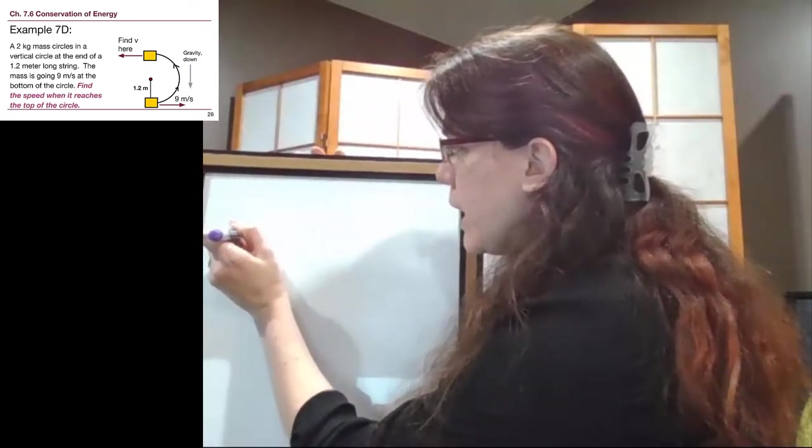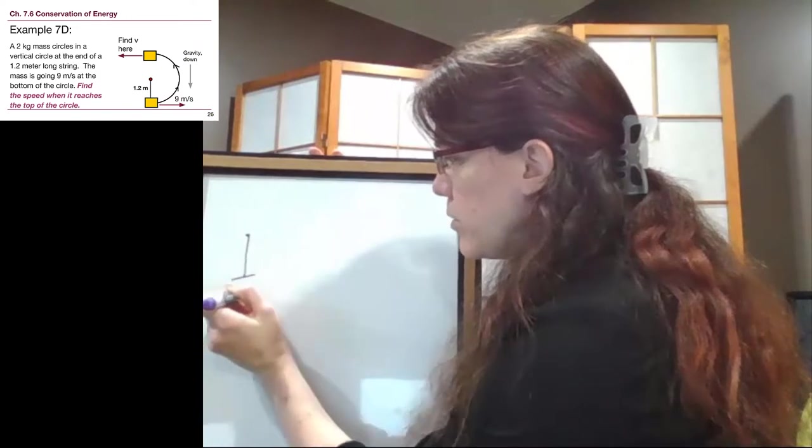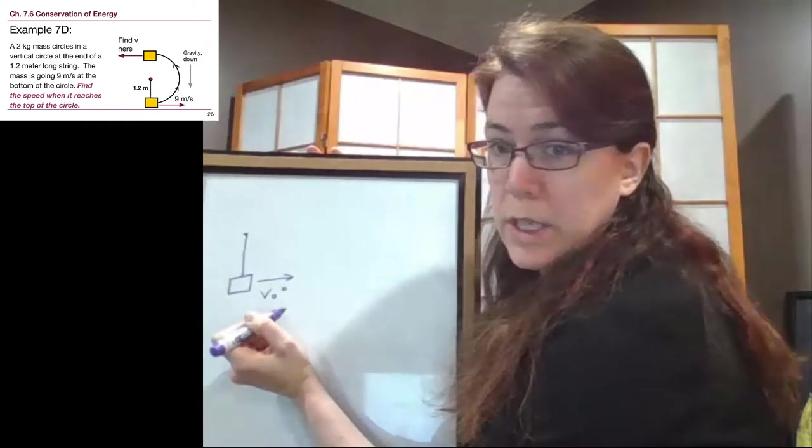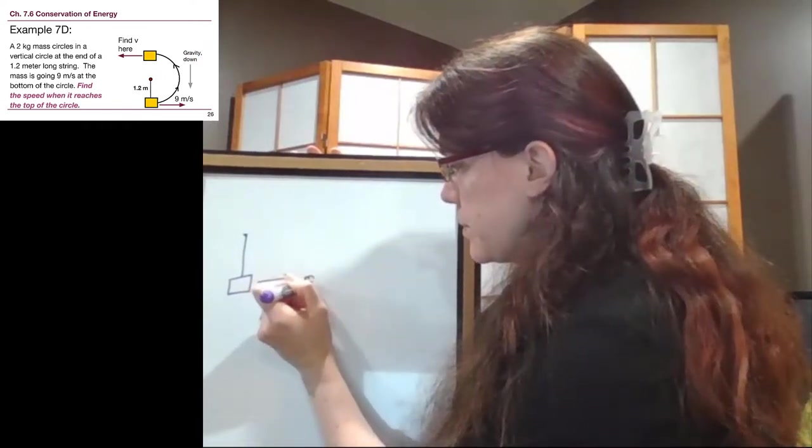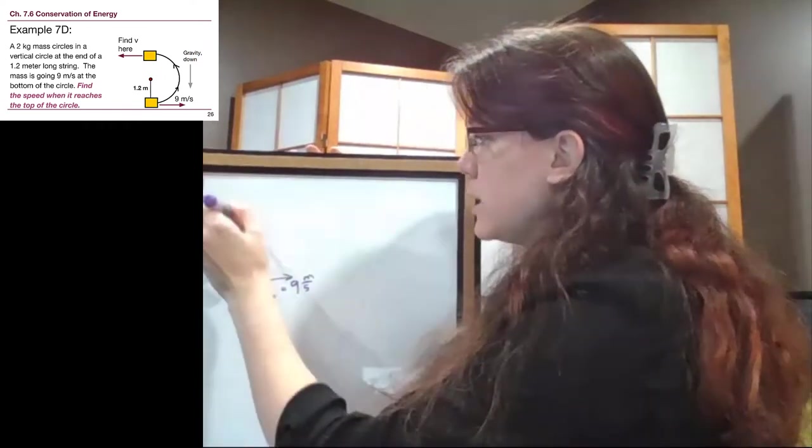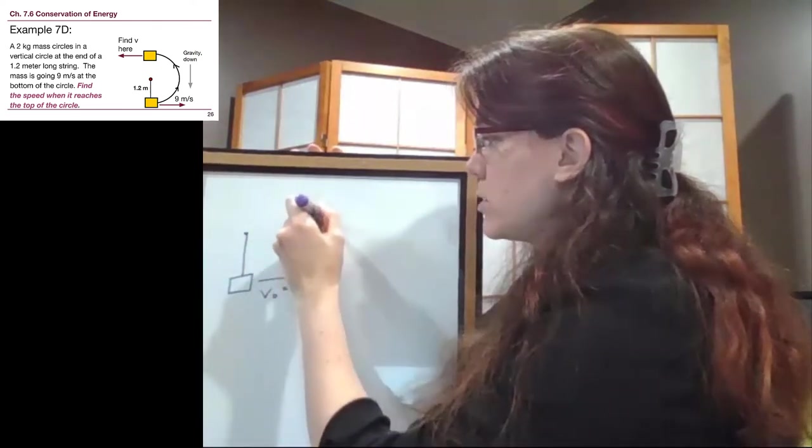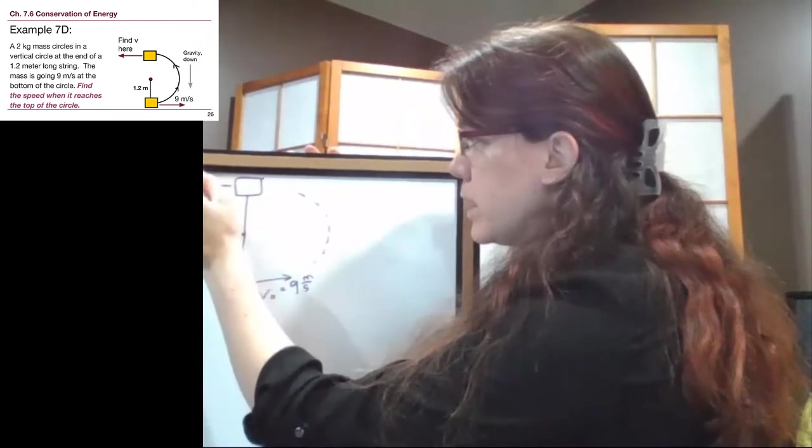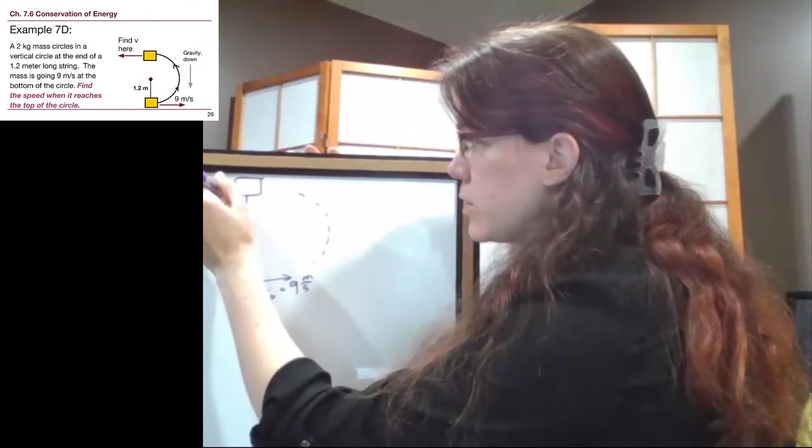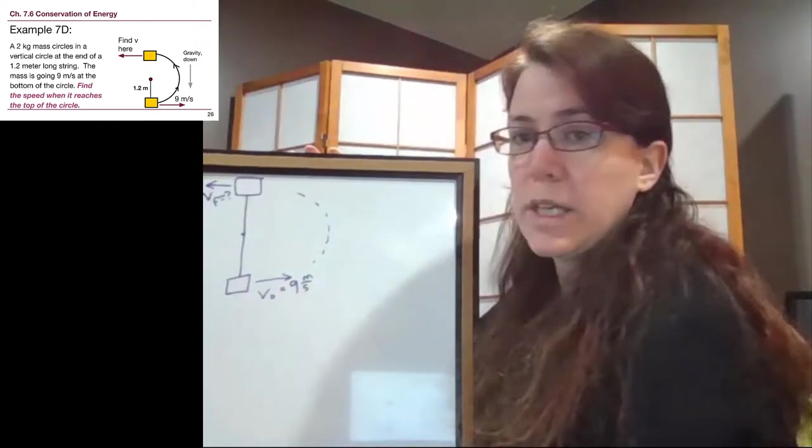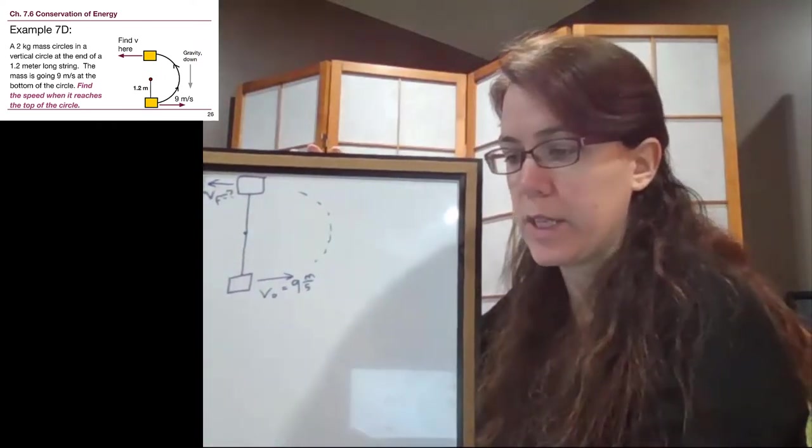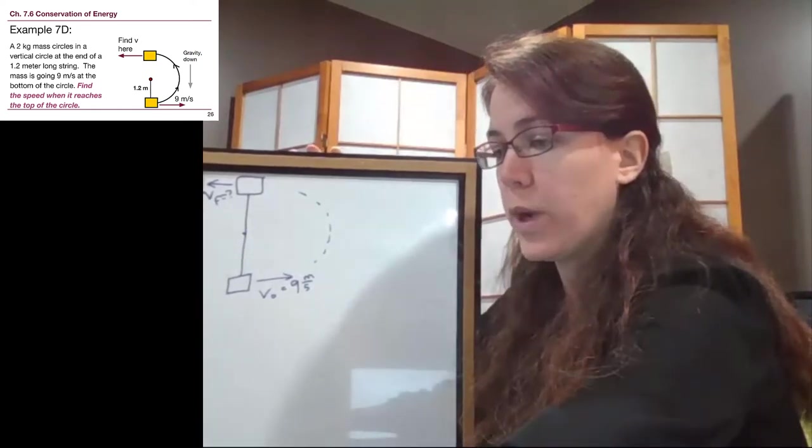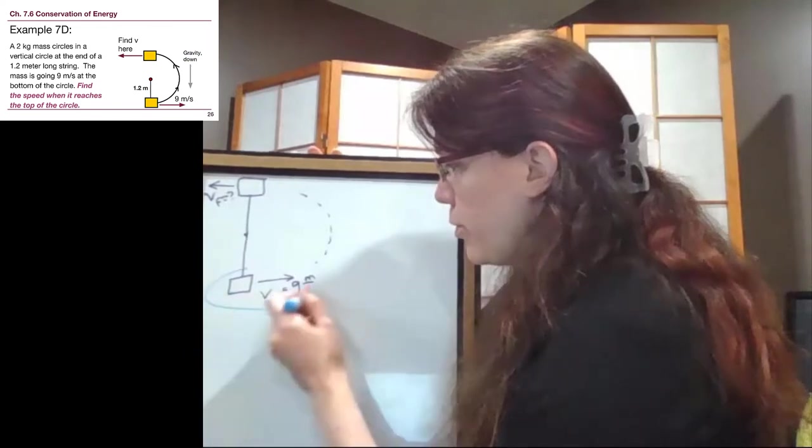Okay, so we have this mass at the bottom of the circle, and its initial speed, we're told, is 9 meters per second. And it makes it all the way around the circle to the top, later in the problem. And so our goal is to find the final speed. The note here on the slide that gravity is down is just to remind us that it's a vertical circle. Now, when we think about the beginning of the problem, that's our before,